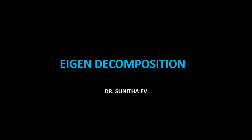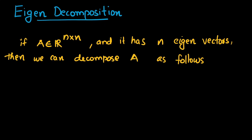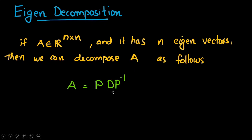Welcome to the session on eigen decomposition. This is a method of decomposing a matrix into components based on eigenvalues and eigenvectors. If A belongs to R n×n, meaning A is an n×n matrix with n eigenvectors, then we can decompose A as follows: A is equal to P times D times P inverse — written as PDP⁻¹. This is the eigen decomposition.